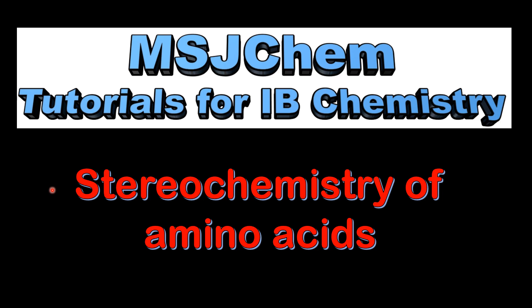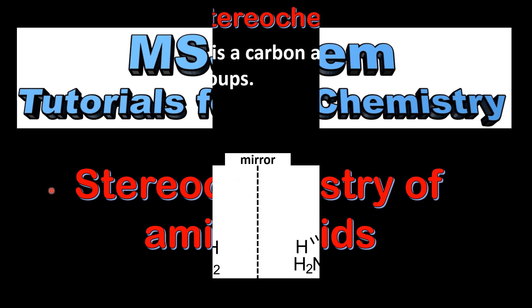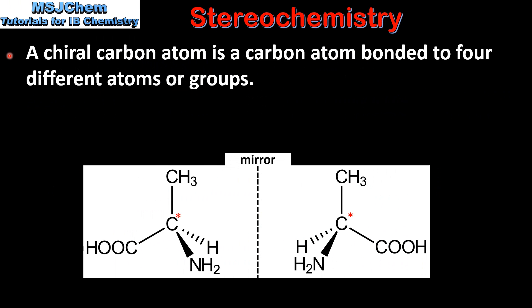This is MSJChem. In this video I'll be looking at the stereochemistry of amino acids. As you may remember from the previous video, a chiral carbon atom is a carbon atom bonded to four different atoms or groups.